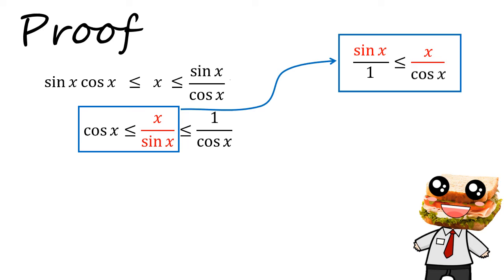Similarly, we can do the same thing. We will just divide by x on both sides. And voila, we get sin x over x is less than or equals to 1 over cosine x.